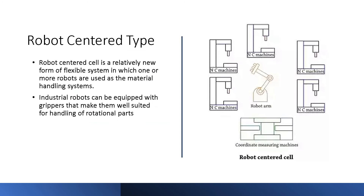Finally, the robot center type. A robot center cell is a relatively new form of flexible system in which one or more robots are used as the material handling system. Industrial robots can be equipped with grippers that are well suited for the handling of rotational parts.